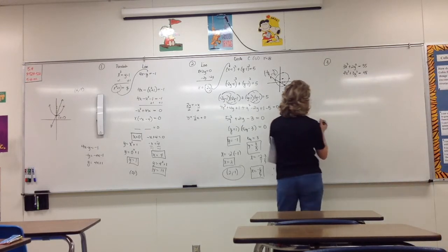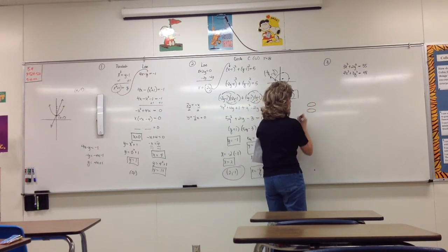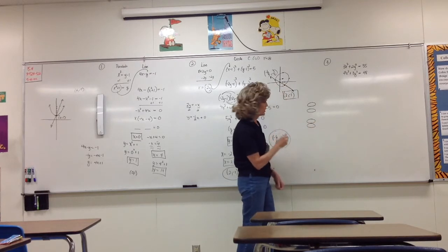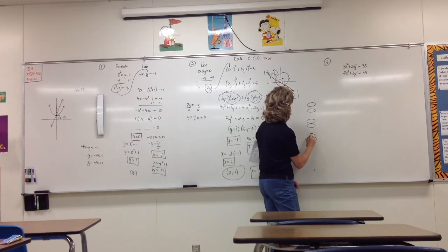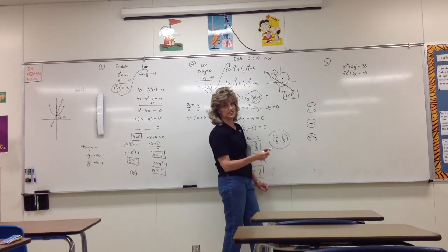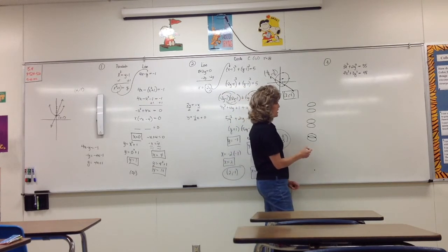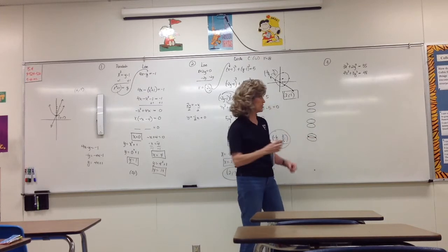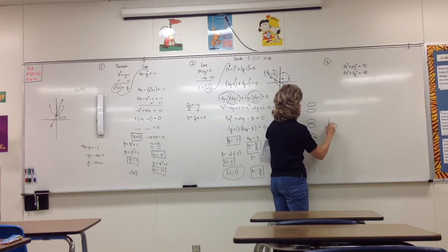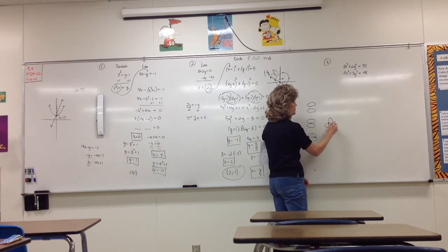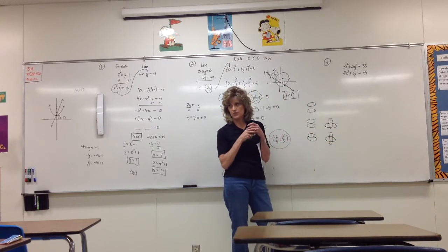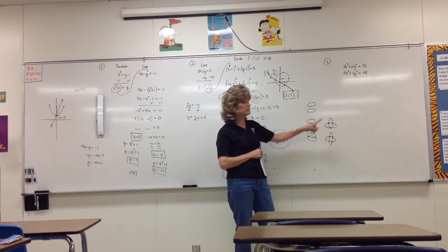What can happen with two ellipses? They could have no points in common — no solution; one point in common; two points in common. Could you have three points? Yes — if one ellipse has a horizontal major axis and the other has a vertical major axis, they can have three points in common. Or two ellipses could even have four points in common.